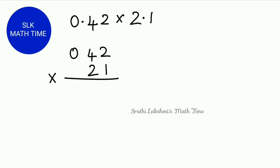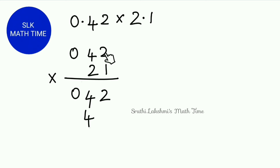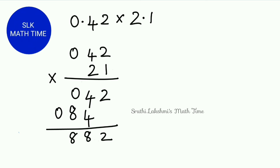Let's see another example: 0.42 times 2.1. Let's multiply them as though they were whole numbers and ignore the decimal points. 1 times 2 is 2; 1 times 4 is 4; and 1 times 0 is 0. Next, 2 times 2 gives us 4; 2 times 4 is 8; and 2 times 0 is 0. Now let's add: we write 2 as it is, 4 plus 4 is 8, 0 plus 8 is 8, and we write the 0 as it is. So the answer of 42 times 21 is 882.